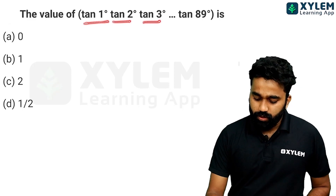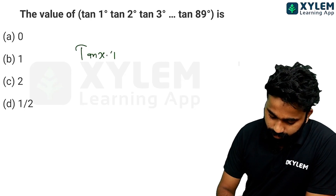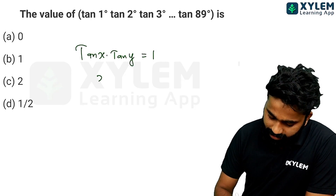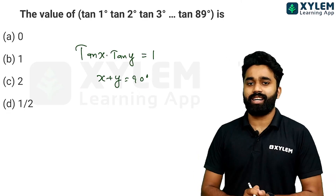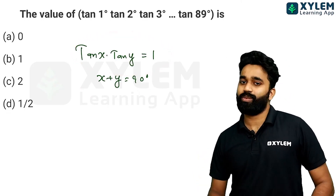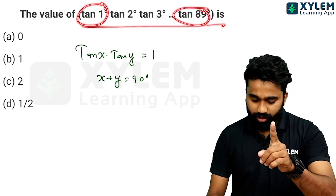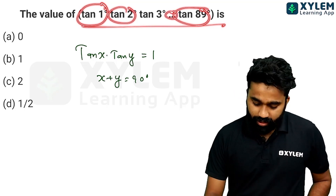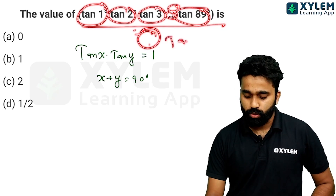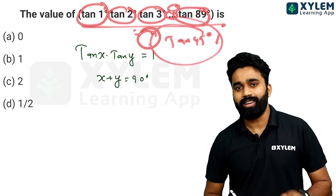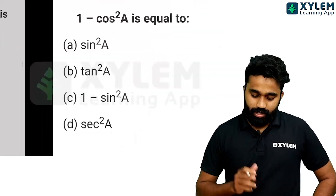The value of tan 1 into tan 2 into tan 3... up to tan 89. We know the relation: tan x into tan y equals 1 when x plus y equals 90. So tan 1 and tan 89 pair to give 1, tan 2 and tan 88 give 1, and tan 45 also gives 1. The final answer is 1 into 1 into 1... which is 1.